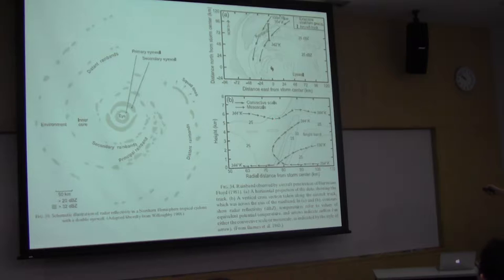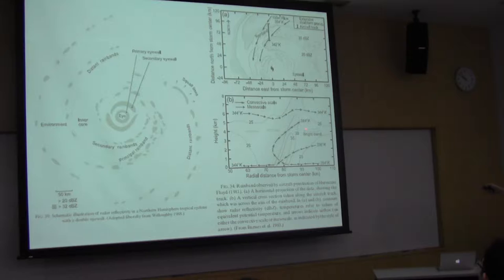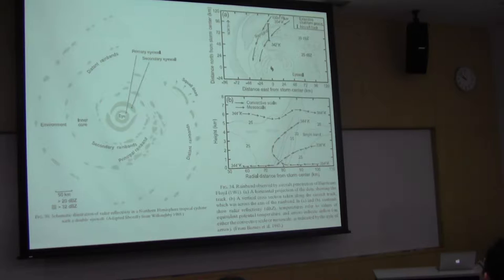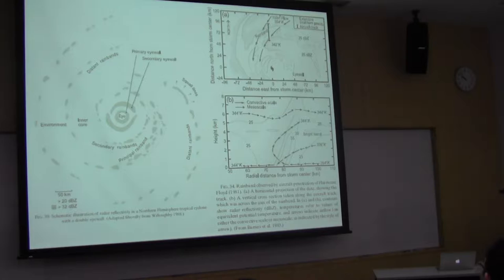The temperatures here are values of theta E. People get somewhat confused by this sometimes because there's arrows going many different ways, but you can think of this as two different types of circulations. One is the classic in-up-out circulation, just like what we found in the eye wall. That vertical motion tends to be maximized on the inner edge, and then the rain falls out behind.